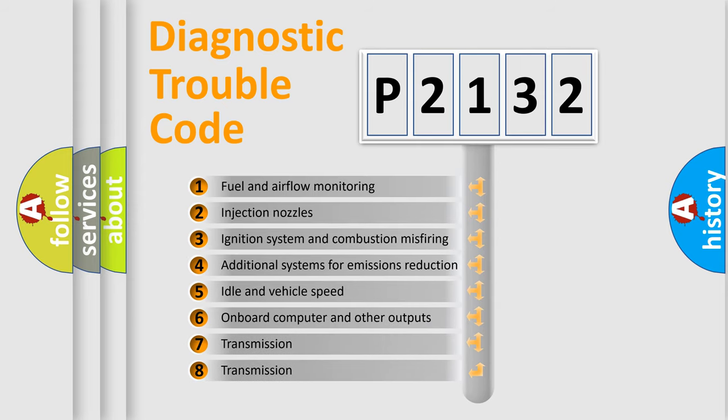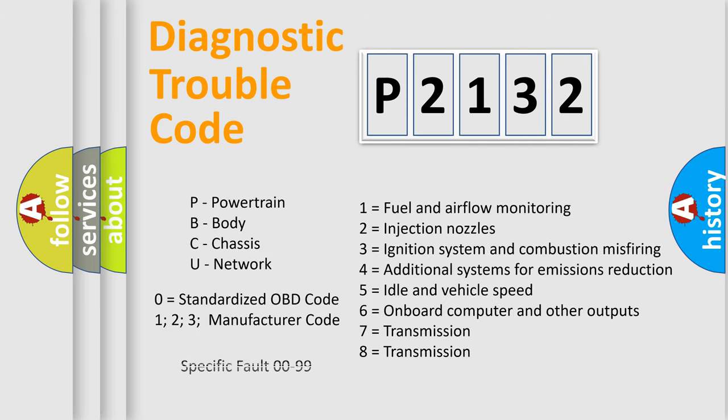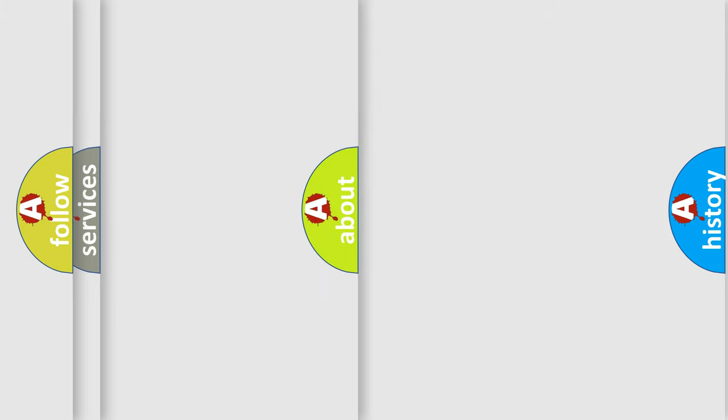The third character specifies a subset of errors. The distribution shown is valid only for the standardized DTC code. Only the last two characters define the specific fault of the group. Let's not forget that such a division is valid only if the second character code is expressed by the number zero.